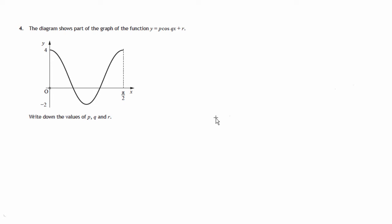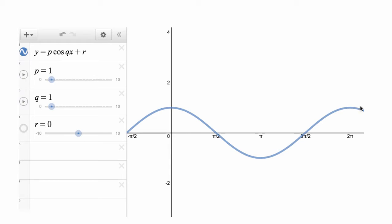So before we do that, let's have a look at an animation. So here's a graph of Y equals P cos QX plus R, and it's set so that P is 1, Q is 1, and R is 0. In other words, it's 1 cos 1X plus 0, that's just cosine of X.